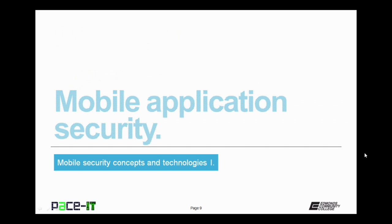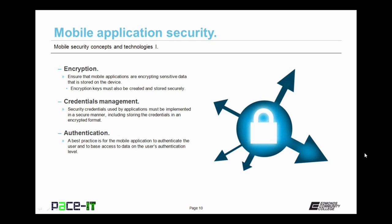Now that we've secured the mobile device, let's move on to mobile application security. First up is encryption. Ensure that mobile applications are encrypting sensitive data that is stored on the device. Encryption keys must also be created and stored securely. Then there's credentials management. Security credentials used by applications must be implemented in a secure manner, including storing the credentials in an encrypted format.